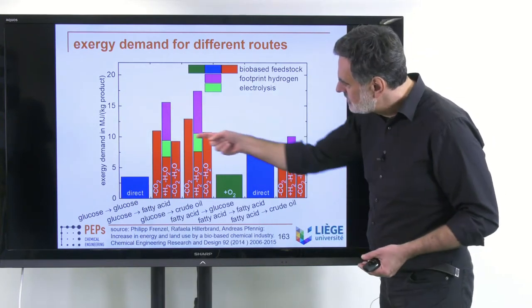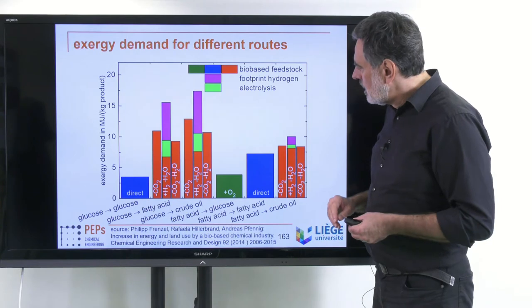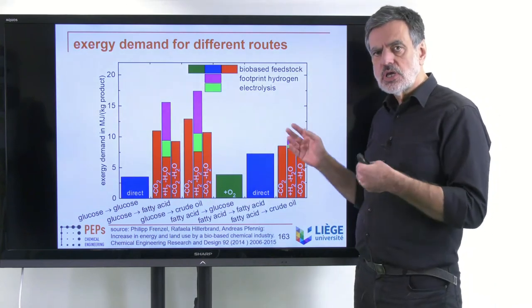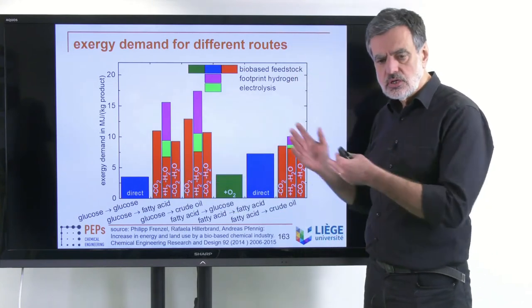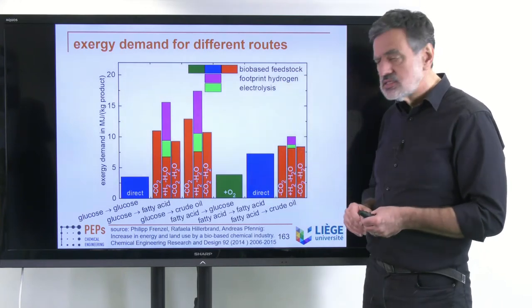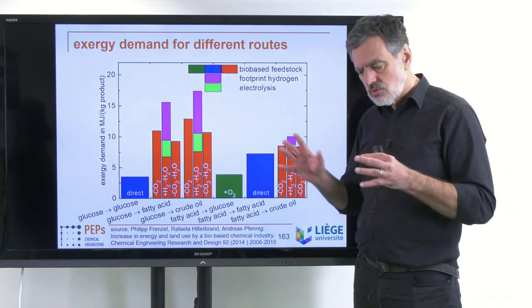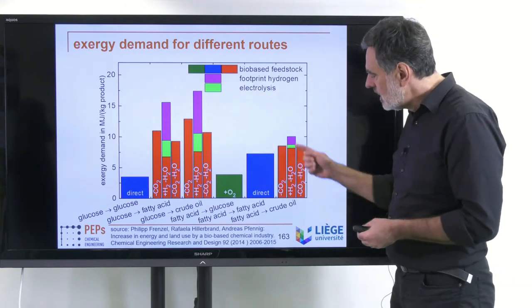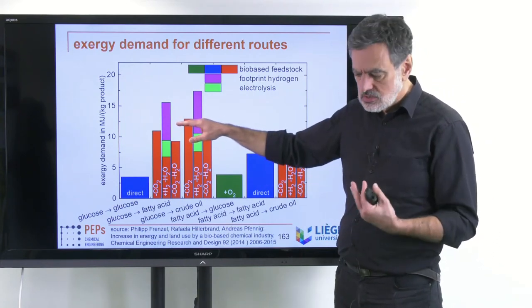But again, possibly these differences are small enough that they are not too dramatic. This allows you to estimate which process options are most optimal. The best is to keep all the oxygen in the product and start with glucose; the second-best is to use fatty acids — plant oil-based products; and if you want crude oil-level components with no oxygen, start with fatty acids, as glucose gives only slightly worse results.